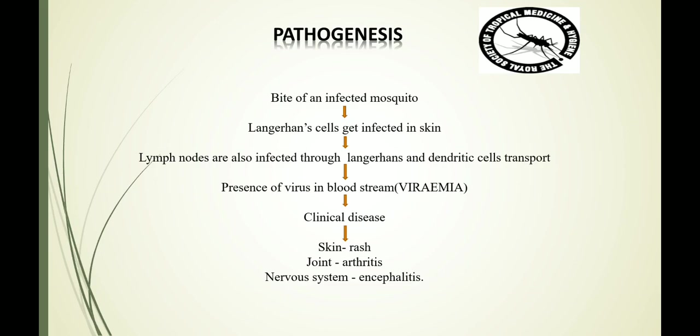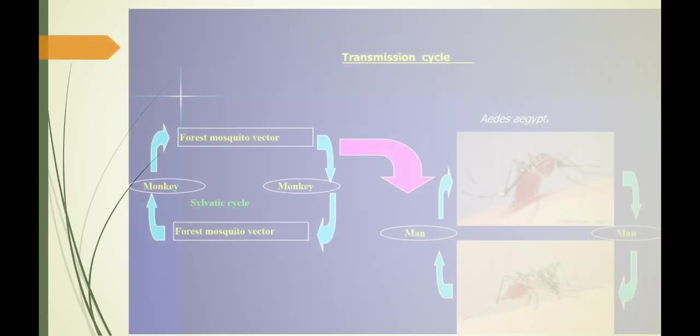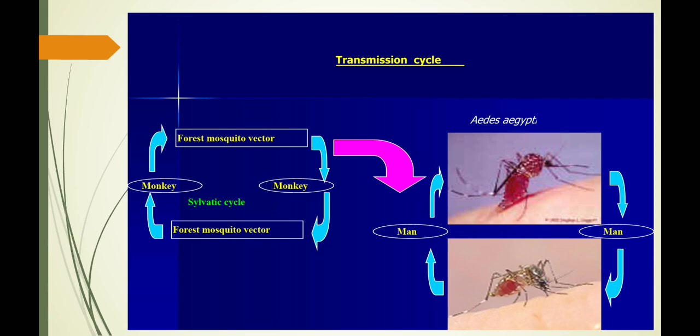In the skin, the patient will develop rashes. If the virus is present in the joints, the patient develops arthritis, or in the nervous system, the patient develops encephalitis. Once the infected mosquito bites, the Langerhans cells and the dendritic cells get infected, transporting the virus to the regional lymph nodes and into the bloodstream, resulting in viremia. There is an urban cycle and a sylvatic cycle. The fifth dengue virus serotype usually follows the sylvatic cycle between the mosquito vector and the monkeys, where the human becomes the accidental host.